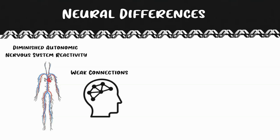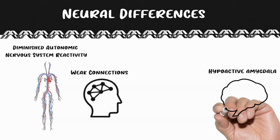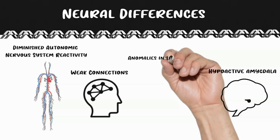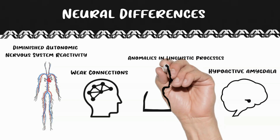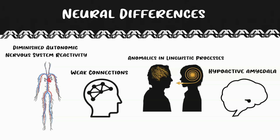Psychopaths also have a hypoactive amygdala, located in the temporal lobe, which monitors the environment for threats and generates an anxiety response when fear is present. Without appropriate threat monitoring and fear responses, a person ends up in some pretty dangerous situations. Psychopaths also have anomalies in linguistic processing, likely related to weak connectivity between emotional and cognitive brain regions. Hare's lateralization theory proposes that psychopaths differ in how they process the affective aspects of language, with limited left hemispheric resources for linguistic stimuli — explaining smaller physiological responses to emotional connotations compared to non-psychopaths.